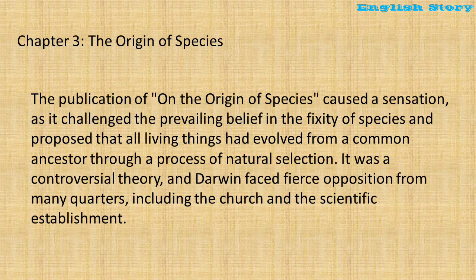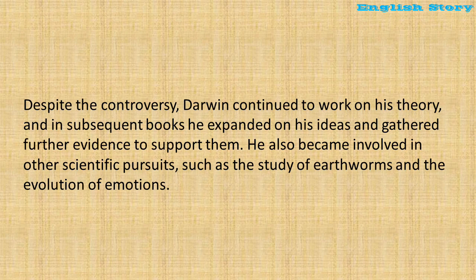Chapter 3: The Origin of Species. The publication of On the Origin of Species caused a sensation, as it challenged the prevailing belief in the fixity of species and proposed that all living things had evolved from a common ancestor through a process of natural selection. It was a controversial theory, and Darwin faced fierce opposition from many quarters, including the church and the scientific establishment. Despite the controversy, Darwin continued to work on his theory, and in subsequent books he expanded on his ideas and gathered further evidence to support them. He also became involved in other scientific pursuits, such as the study of earthworms and the evolution of emotions.